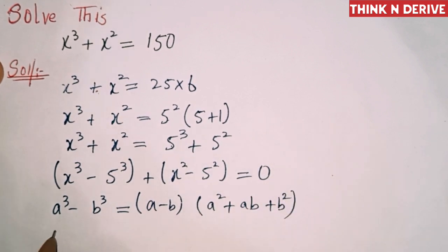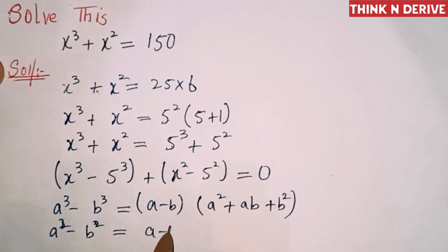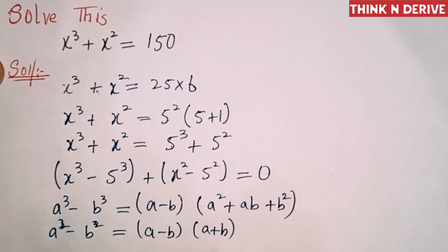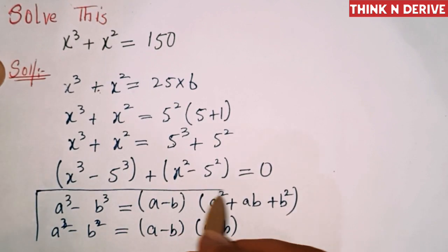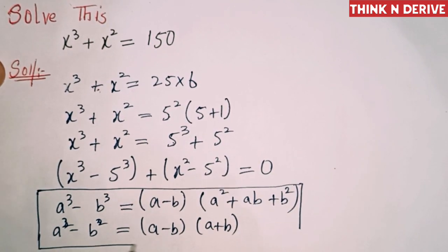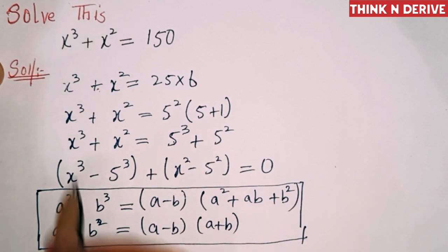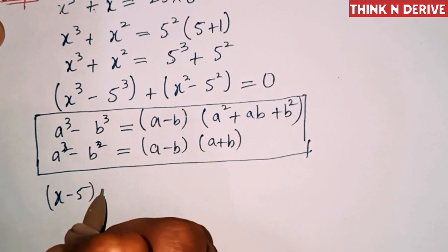And the other one is a² - b² = (a - b)(a + b). So we'll apply these two formulas here. This can be written as (x - 5)(x² + 5x + 25) + (x - 5)(x + 5) = 0.